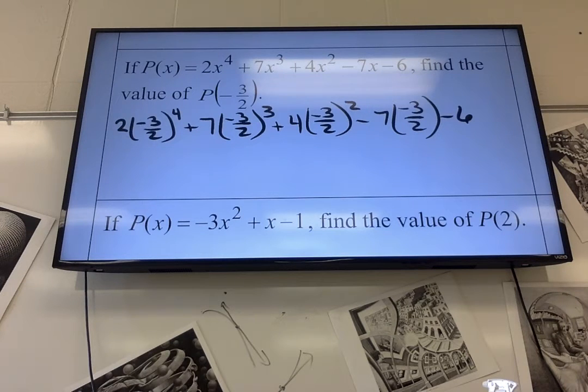So, 3 to the 4th is 81. 3 times 3 times 3 times 3. And, it doesn't matter that it was negative because it's being raised to an even root. So, it's going to be 81 over 2 to the 4th, which is 16. 2 times 2 times 2 times 2.